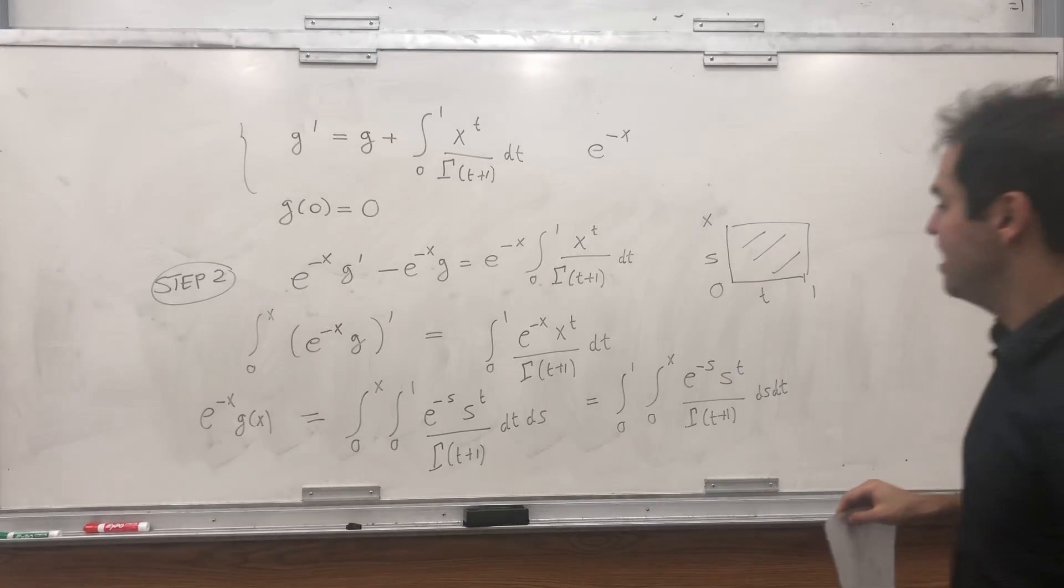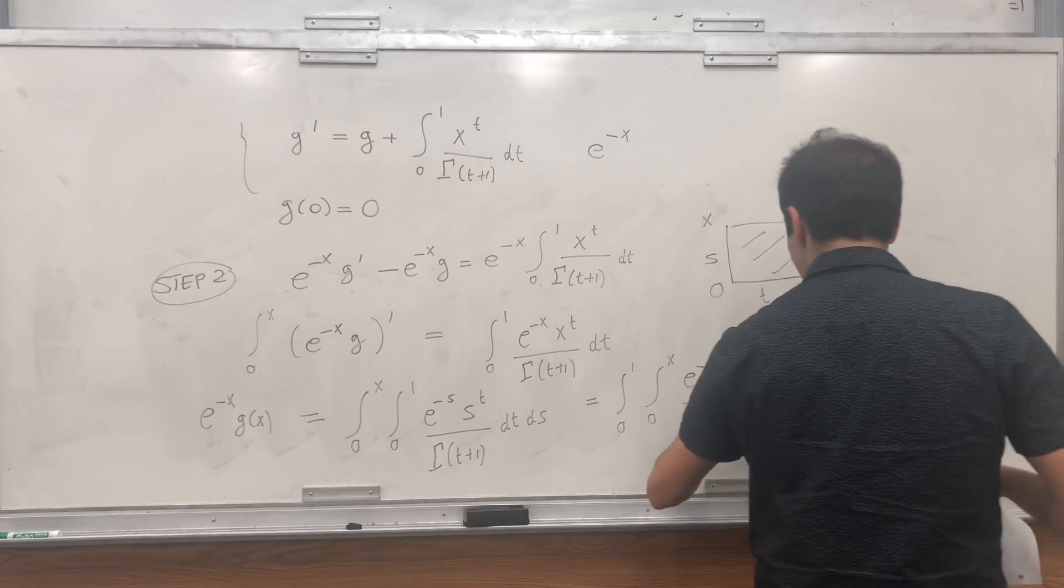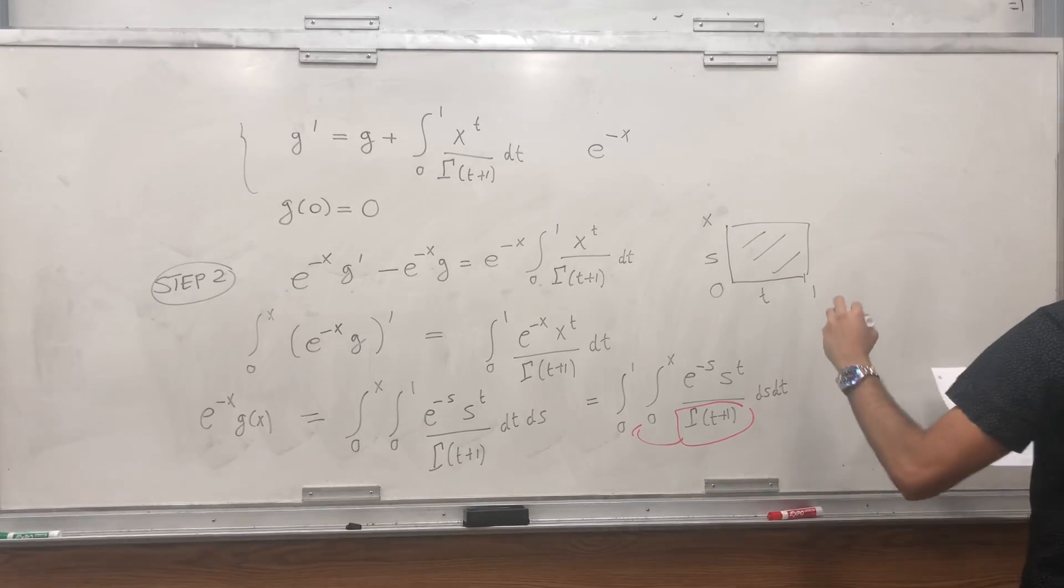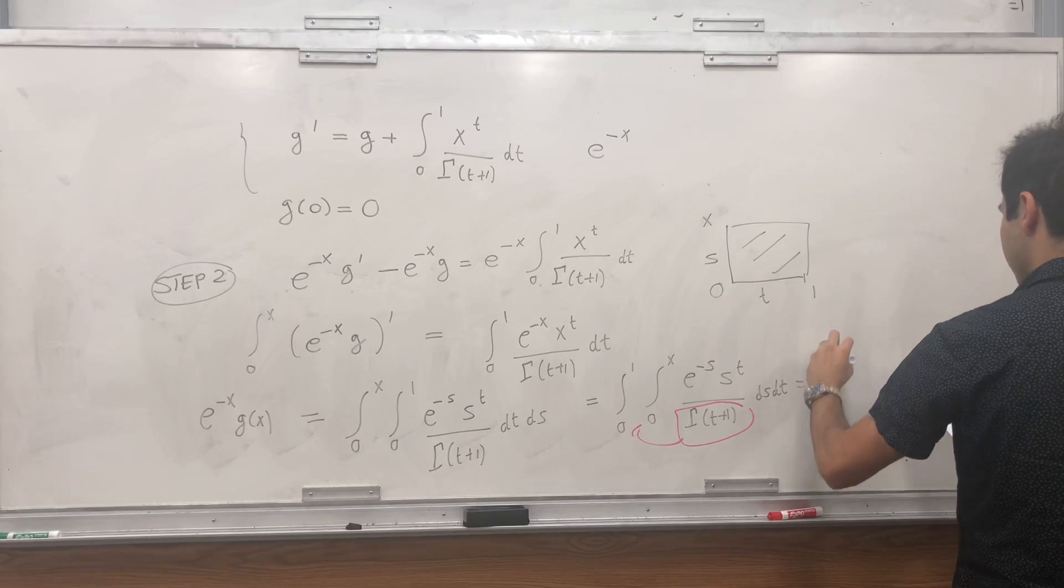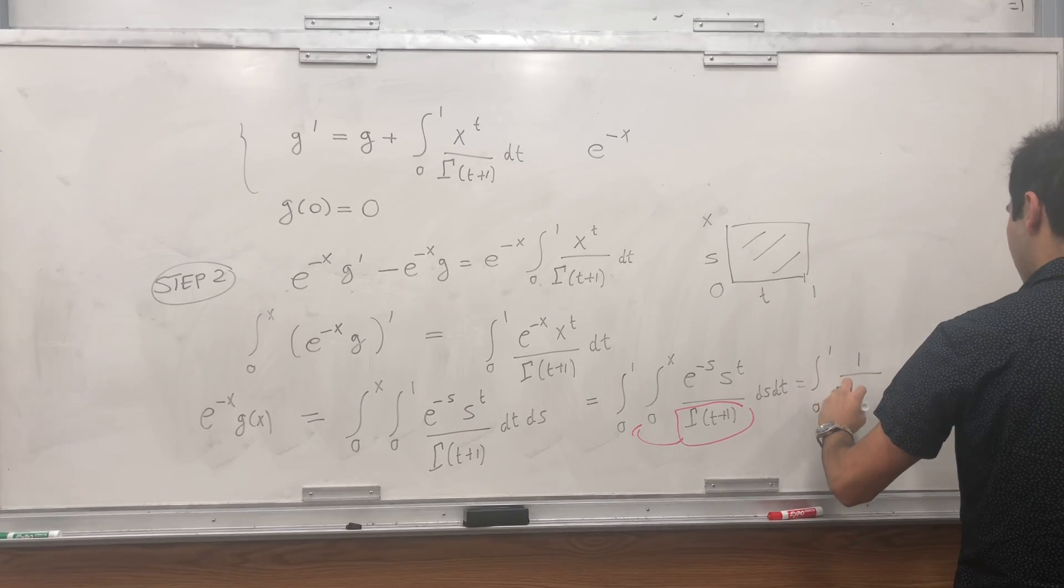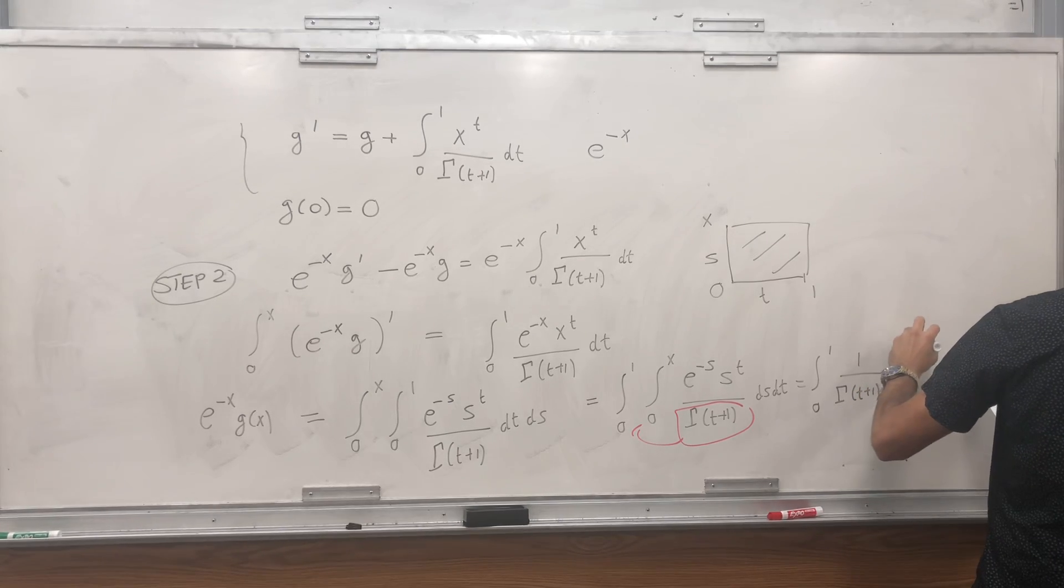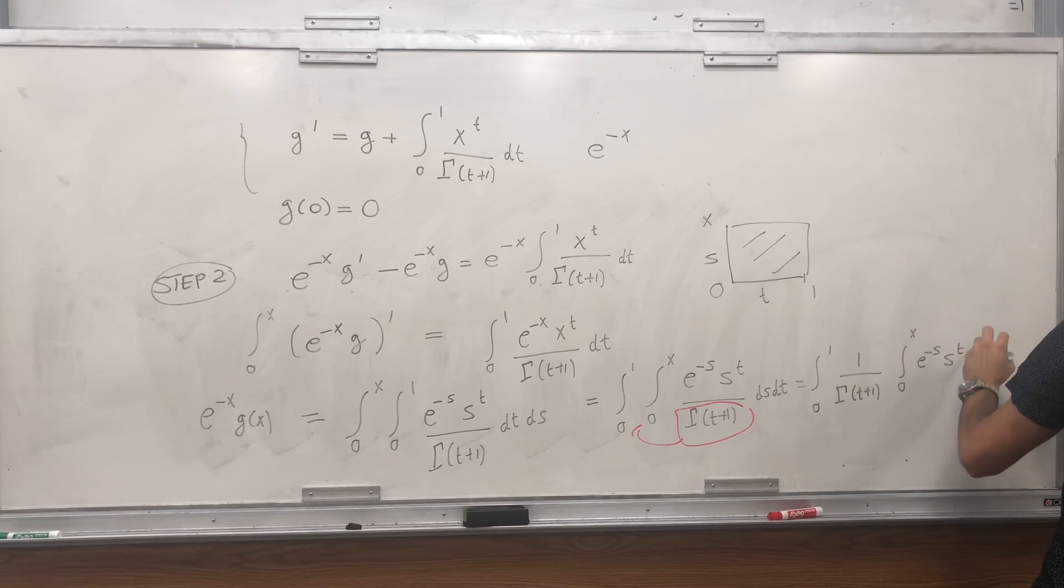And what's nice is, this bad term, this 1 over gamma term, we can just pull it outside. And then you get a much easier integral. So this is integral from 0 to 1, 1 over gamma of t plus 1, integral from 0 to x, e to the minus s, s to the t, ds dt.